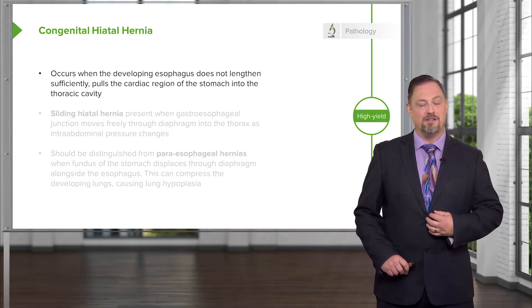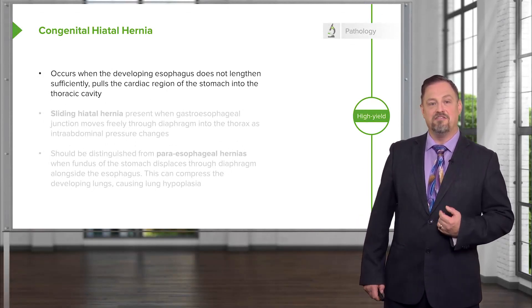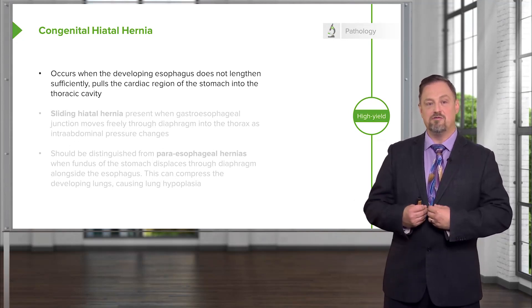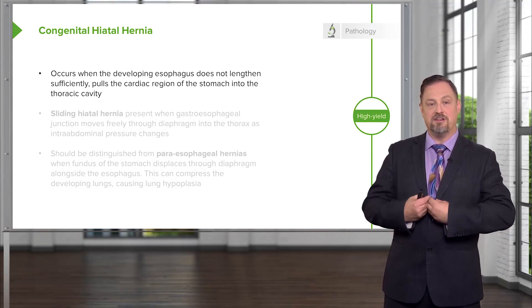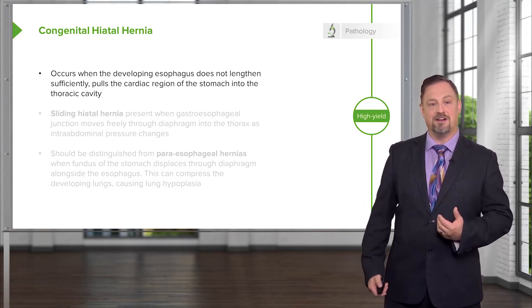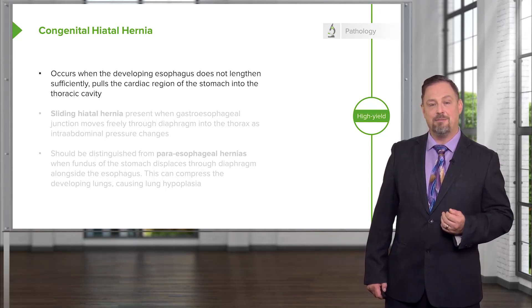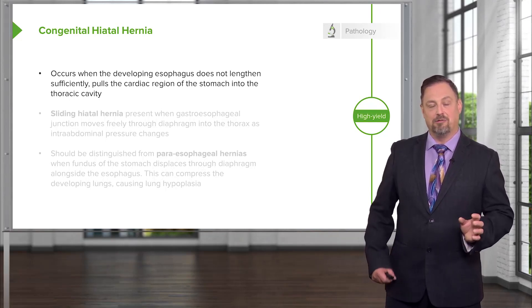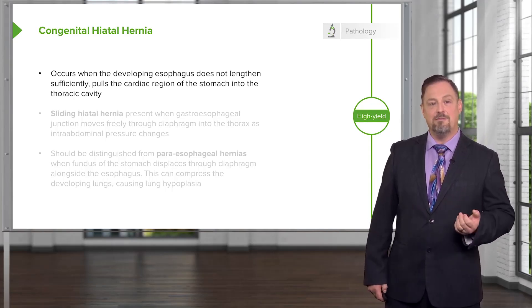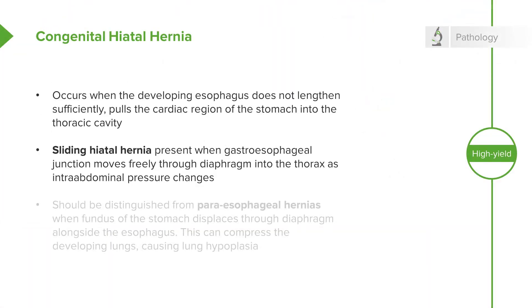Amongst other problems that can occur in this very proximal part of the foregut are congenital hiatal hernias. This is simply the esophagus being too short. Since the esophagus doesn't reach the abdominal cavity, the very proximal portion of the stomach is inside the thoracic cavity, and interestingly many people have these and are completely asymptomatic. You want to distinguish this from a sliding hiatal hernia, where the esophagus is long enough to reach the abdomen but increased abdominal pressure pushes the very proximal stomach up into the thoracic area, as though it's sliding through that opening through the diaphragm.